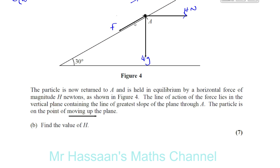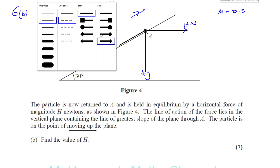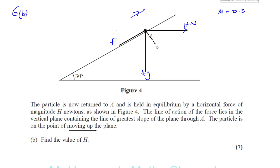And you have the component of the weight now acting parallel and perpendicular to the plane. So let me just make this into a dotted line. This is the component of the weight acting perpendicular to the plane. And you've also got the component of the weight acting parallel to the plane, which is going to be in the same direction as the friction. So this is your 30 degrees. So this is 4G sine 30, and this is 4G cosine 30.